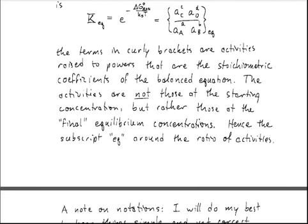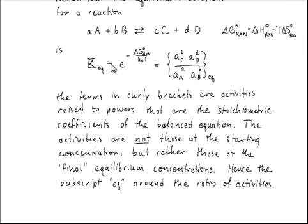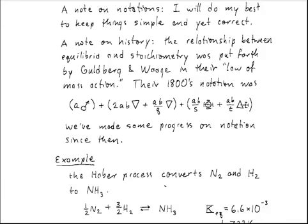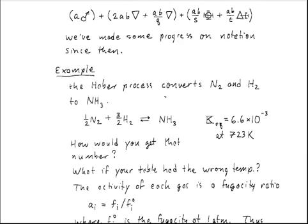This equation is true when the species each reach their equilibrium concentrations for this reaction. If you just plug in non-equilibrium conditions into standard activity expressions, you will find something very different from the exponential of the Gibbs free energy of reaction. This is commonly known as the law of mass action, originally put forth by Goldberg and Waage in their famous paper from the 1860s. Their notation looked quite strange; things have gotten somewhat better in terms of notation since then.